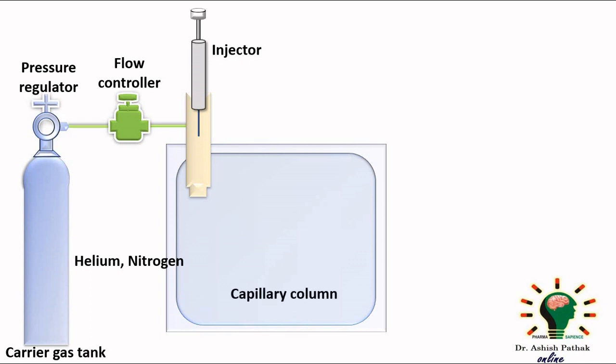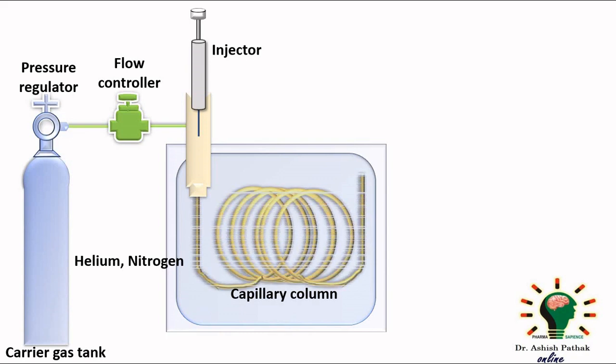So most commonly used column is capillary column. Compounds which have less affinity for this column will elute first and reach to the detector.